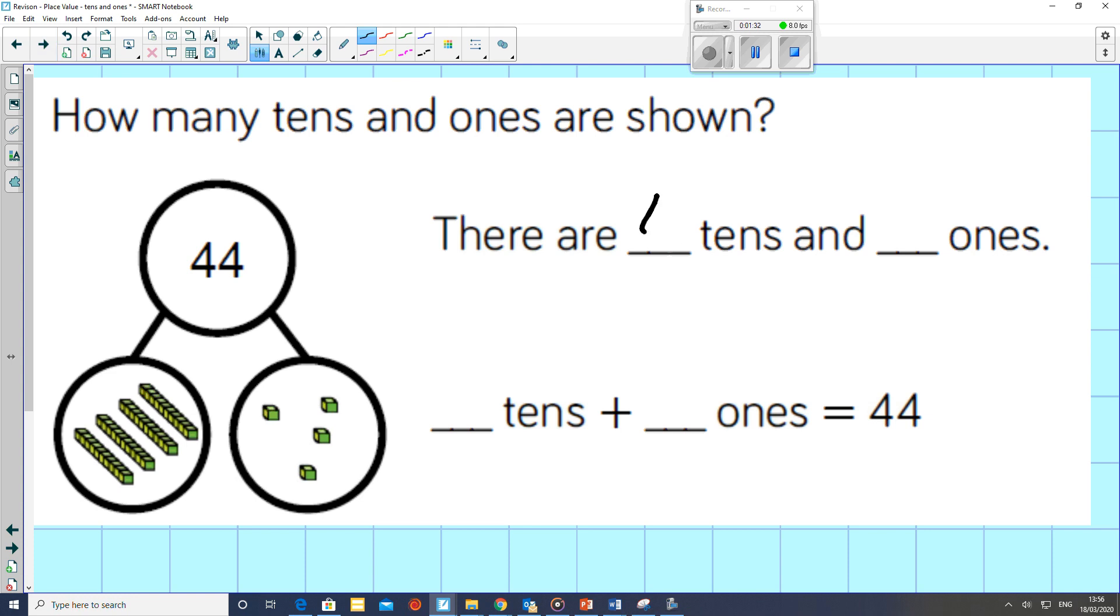And we have 4 ones. So there are 4 tens and 4 ones. 4 tens which is 40, and 4 ones. Together, they total 44.